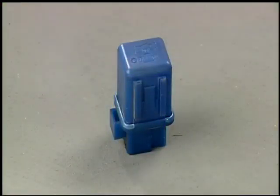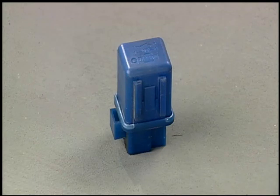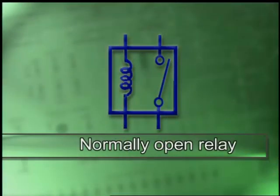A relay is an electromagnetic switch that is used to control high current circuits. The symbol for a relay is a box with the electromagnet shown as a coil of wire. A normally open relay has the symbol for a normally open switch next to the symbol of a coil.